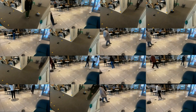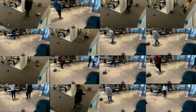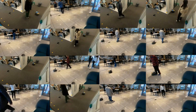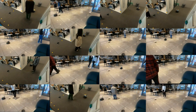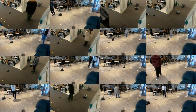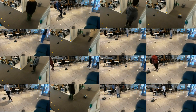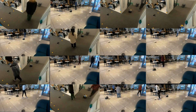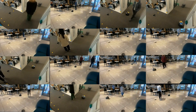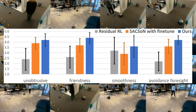To evaluate our policy around pedestrians, we recruit 10 human subjects and ask them to walk around the robot without explaining which control policy is deployed. After each experiment, we ask four questions with a five-point Likert scale. Our policy shows an explicit advantage over the two strongest baselines.